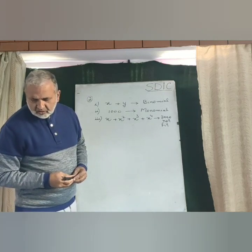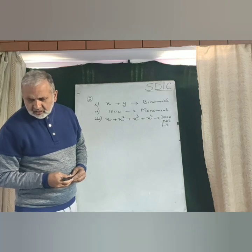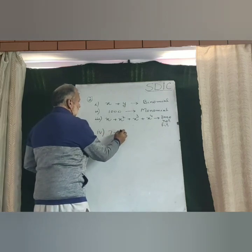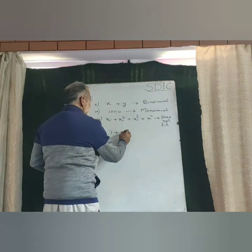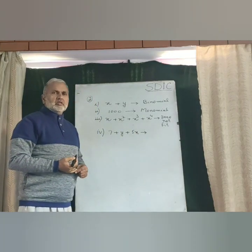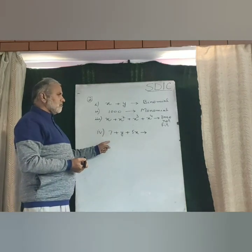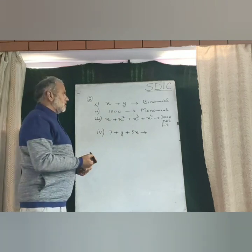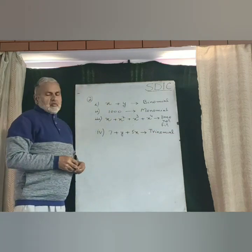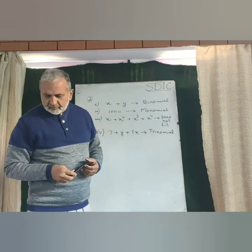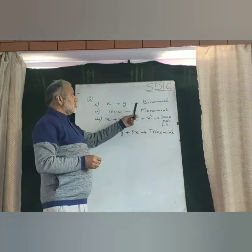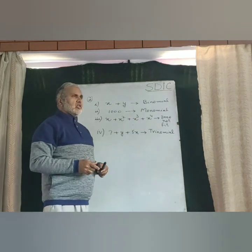One more part: part number four is seven plus y plus five x. Count the number of terms — we have three terms. Seven is the first term, y is the second term, and five x is the third term. Therefore it is a trinomial. You can similarly count the terms in the remaining parts and identify whether each is a monomial, binomial, trinomial, or does not fit.